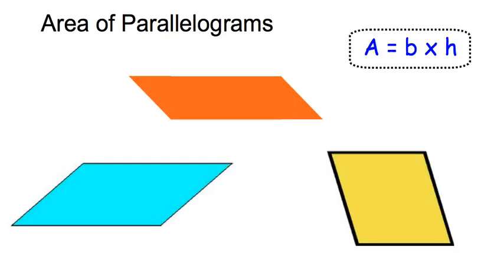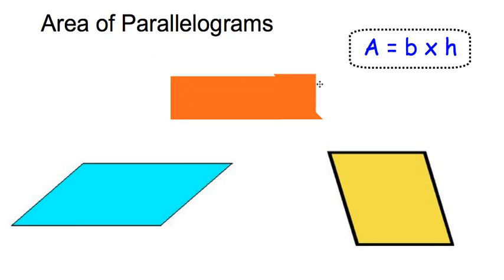For the area of parallelograms we use the exact same formula: area equals base times height. Here's why — because a parallelogram is essentially a rectangle. Watch this: if I take this side of the parallelogram and just drag it over, it fits just like a puzzle piece, and now all of a sudden we have a rectangle. So the formula for the area of a parallelogram is the exact same as for a rectangle.